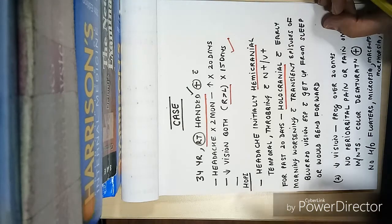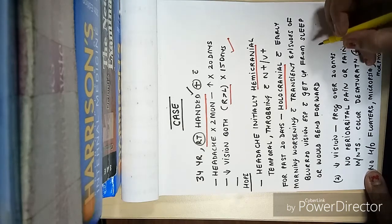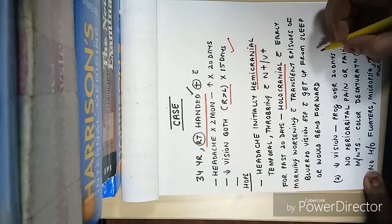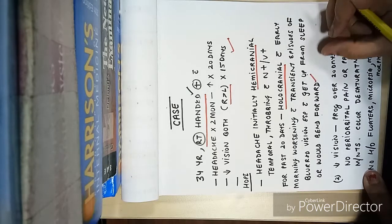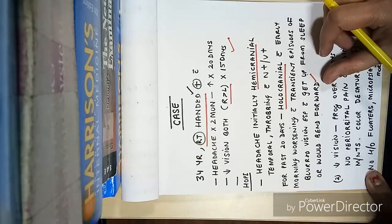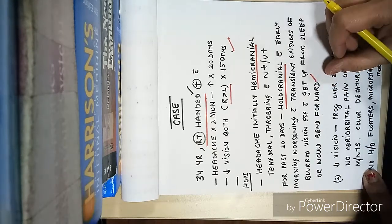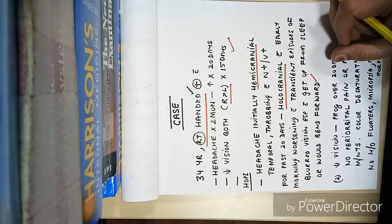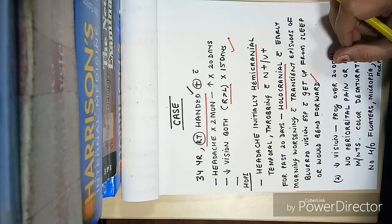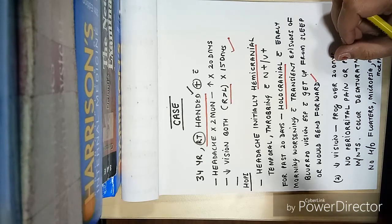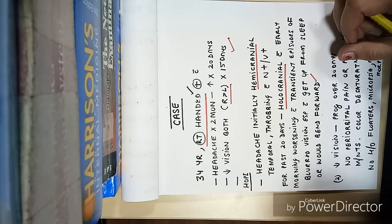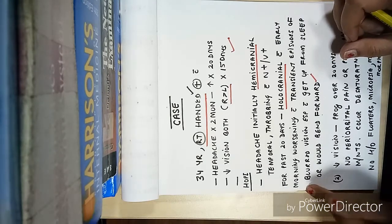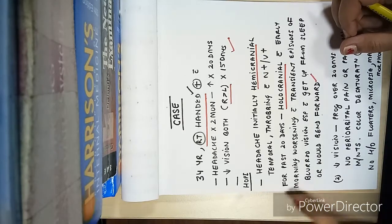Two important things: she had early morning worsening with transient episodes of blurred vision, especially on getting up from sleep, and increase on bending forward. What is the implication of this history? A patient having hemicranial headache with nausea, vomiting, throbbing - you can say this is migraine headache, a vascular headache. But in this history the character has changed.